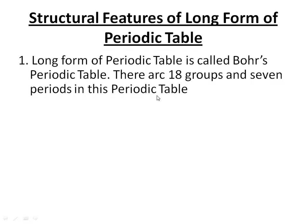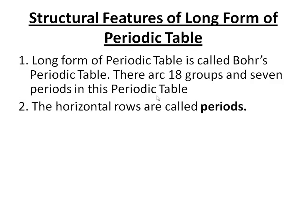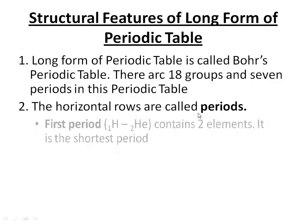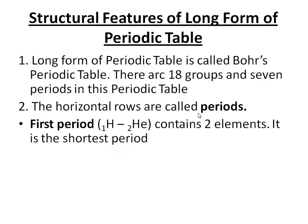In the modern periodic table there are 18 groups and 7 periods. The horizontal rows are called periods and the vertical columns are called groups. There are totally 7 periods. The first period consists of two elements — hydrogen (atomic number 1) and helium (atomic number 2). It is the shortest period because it contains only two elements.